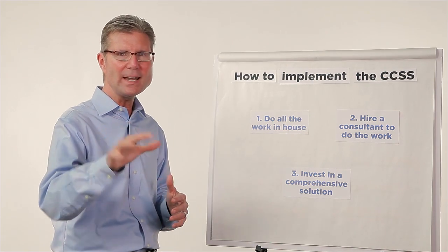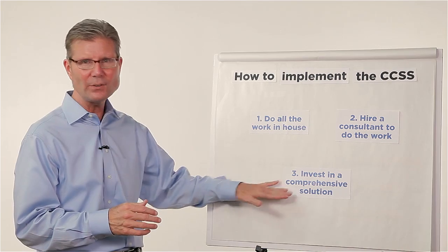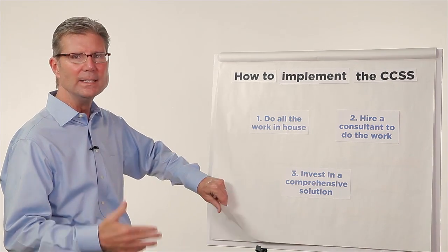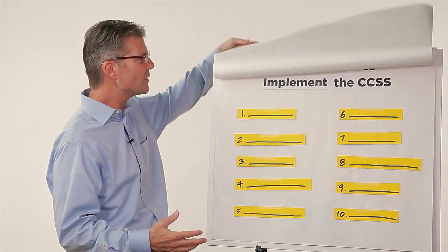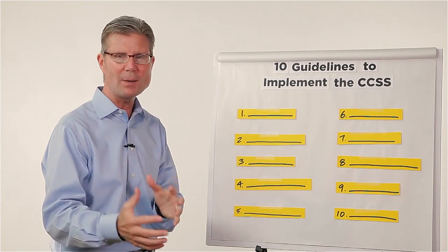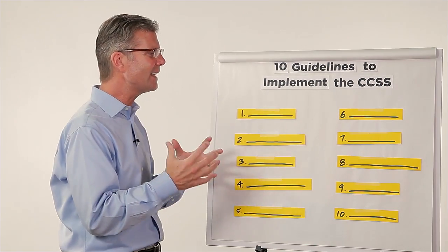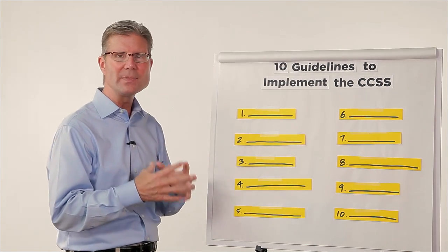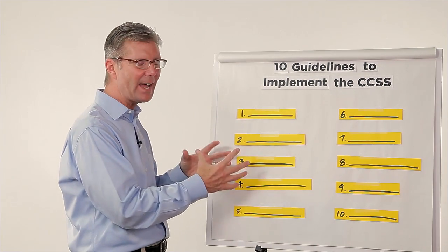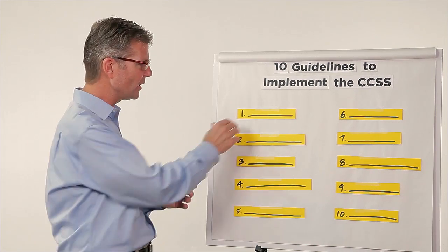Now, you may not be at a decision point, but if you're even considering a comprehensive approach — even thinking about option three — let me give you a little more to think about before you take that step. If you're going to go with a comprehensive approach, I want you to consider the 10 guidelines to implementing the Common Core State Standards. These are 10 guides that are going to help you direct where you want your process to go.